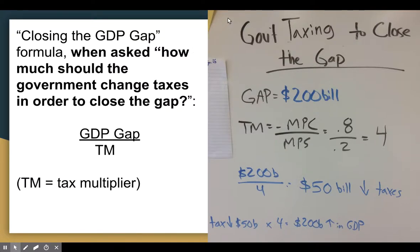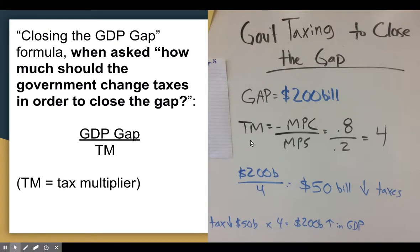The second way you could be asked is: instead of spending, how much should the government change its taxes to close the GDP gap? Our economy is $200 billion below where it should be, so we want to expand. We replace the spending multiplier with the tax multiplier, because the question asks about taxes. The tax multiplier is negative MPC over MPS. But since we're trying to help the economy grow, we want to decrease taxes — which has a positive impact — so we drop the negative sign. Plugging in 0.8 over 0.2: if you have trouble with decimals, treat it as 8 over 2, which gives us four.